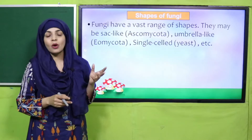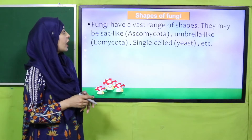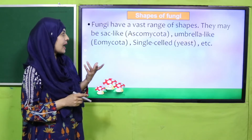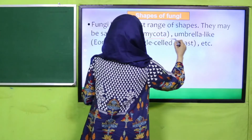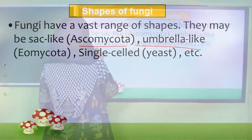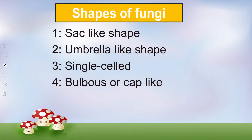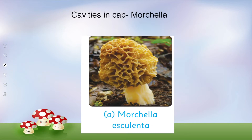My dear students, let's discuss the shape of fungi. Fungi have a vast range of shapes. They may be sac-like (Ascomycota), umbrella-like (Basidiomycota), single-cell like yeast, or globose/cap-like. So the shapes of fungi include sac-like, umbrella-like, single-cell, and globose or cap-like.